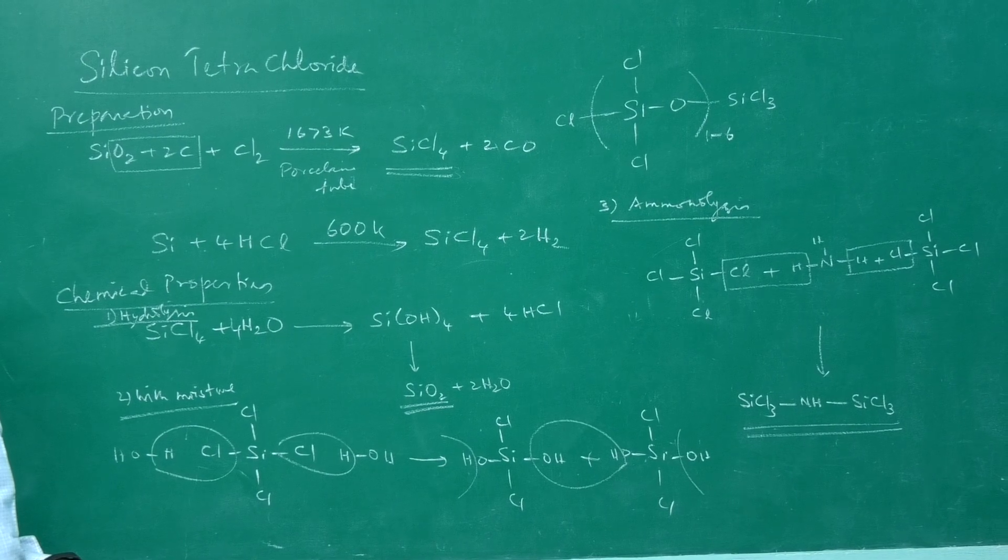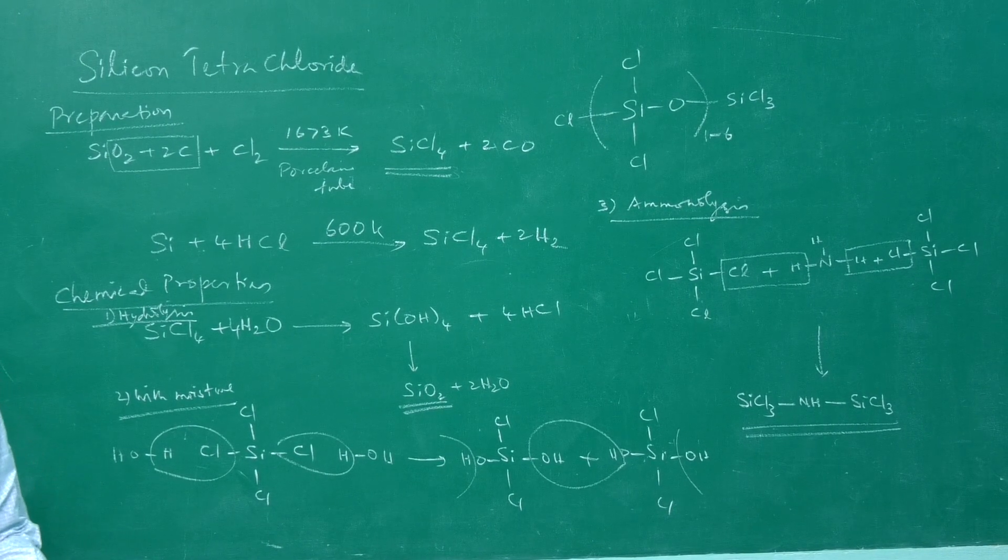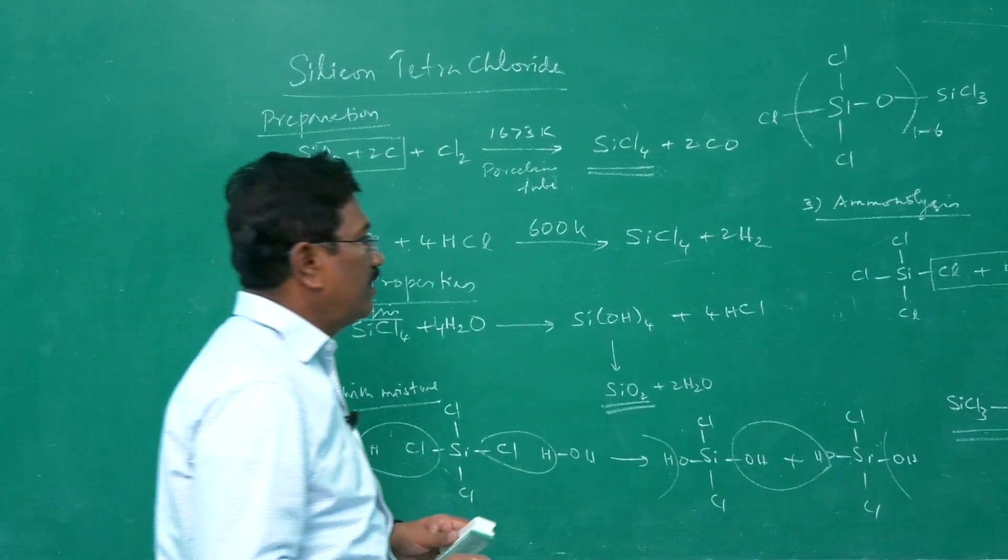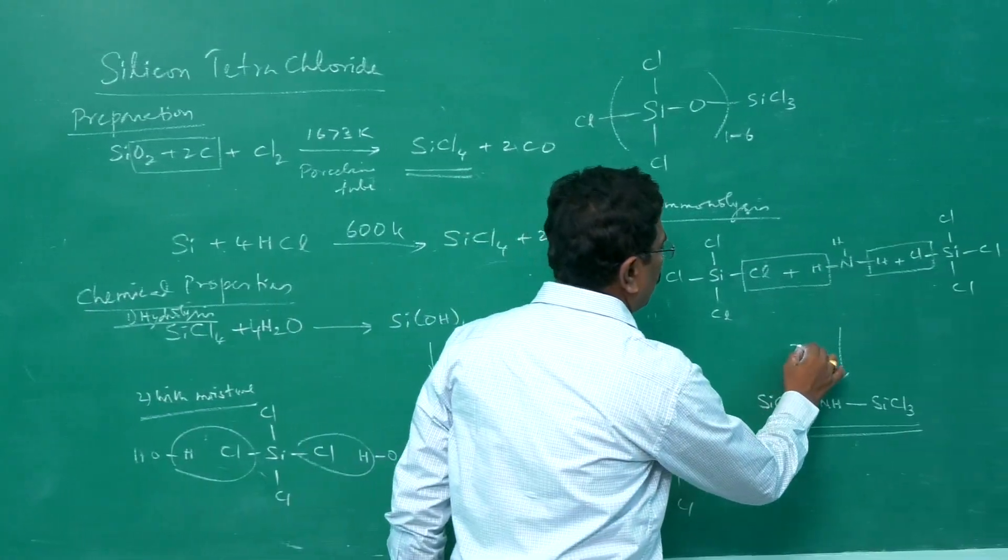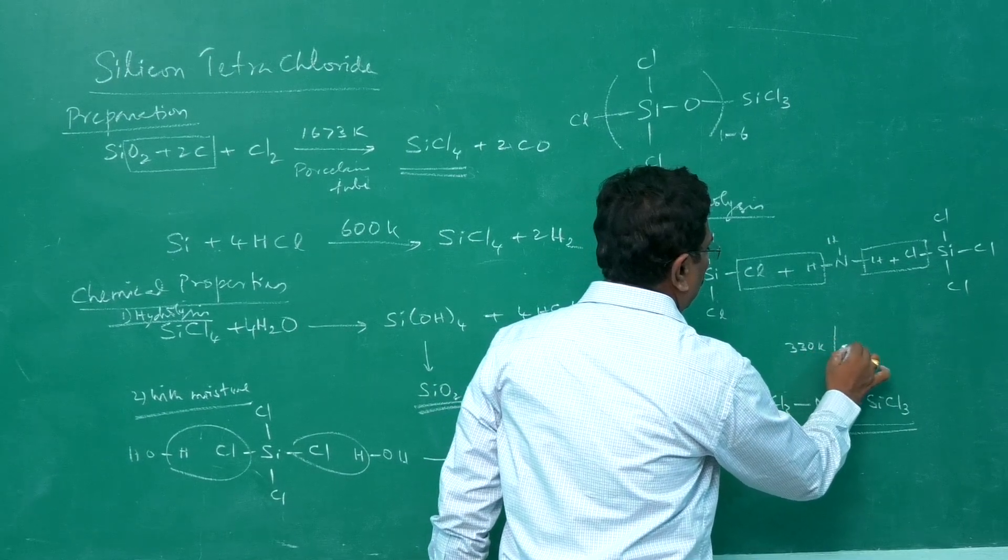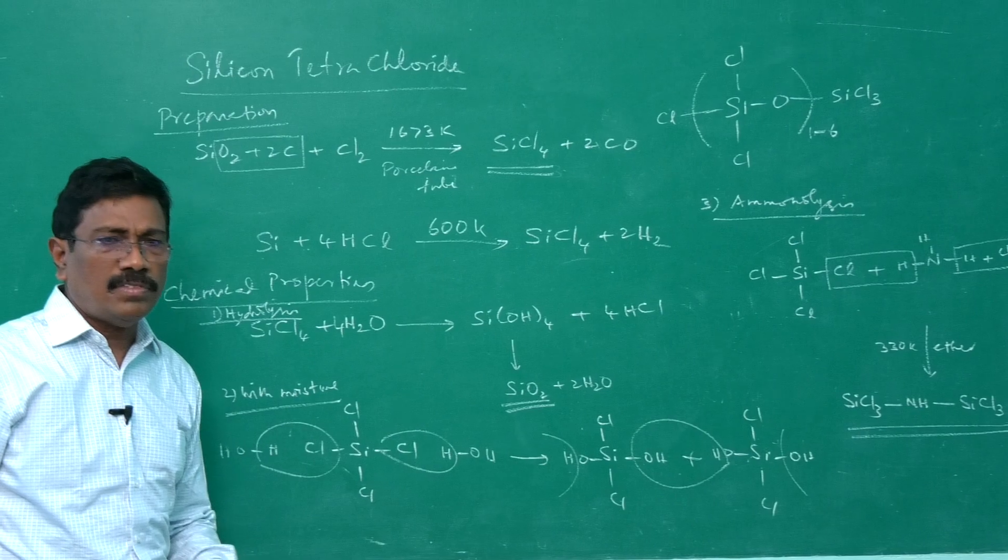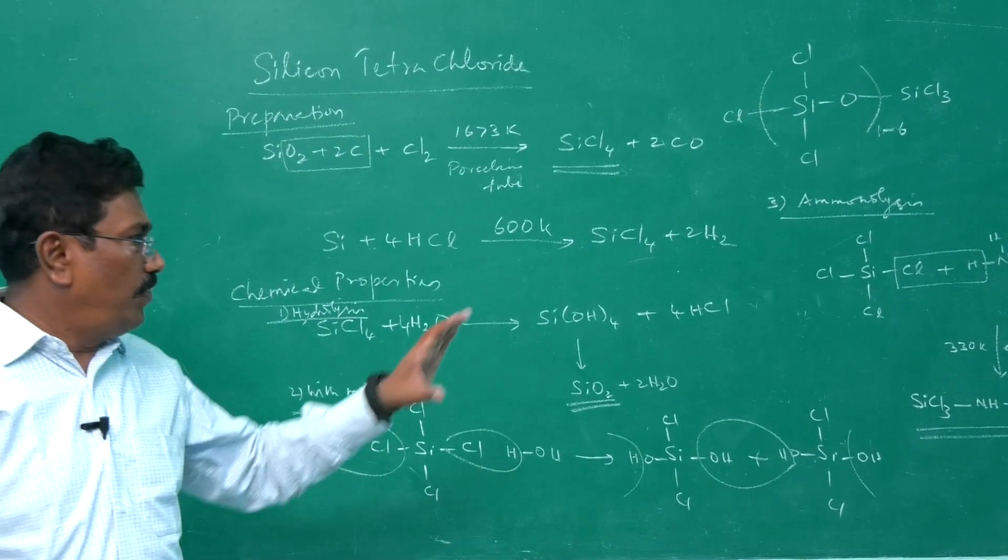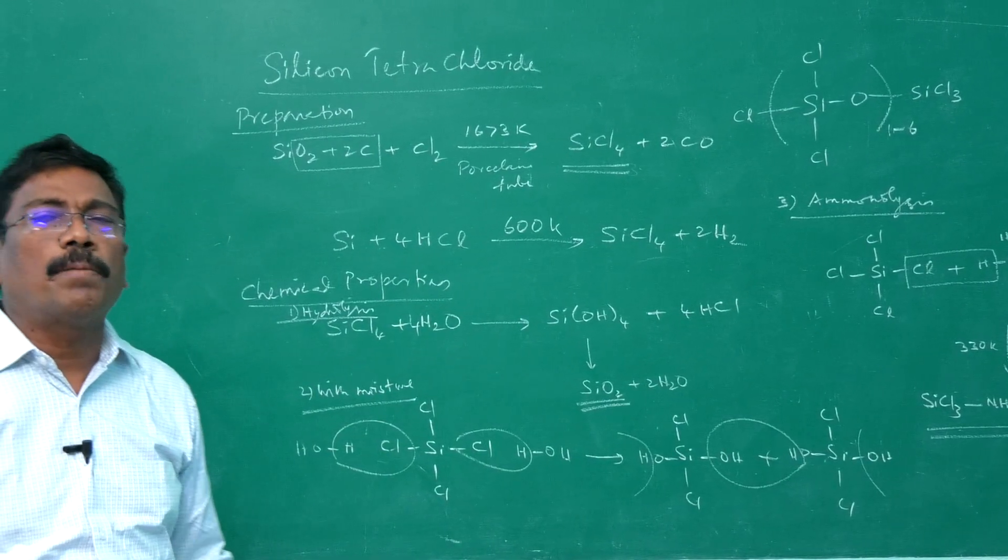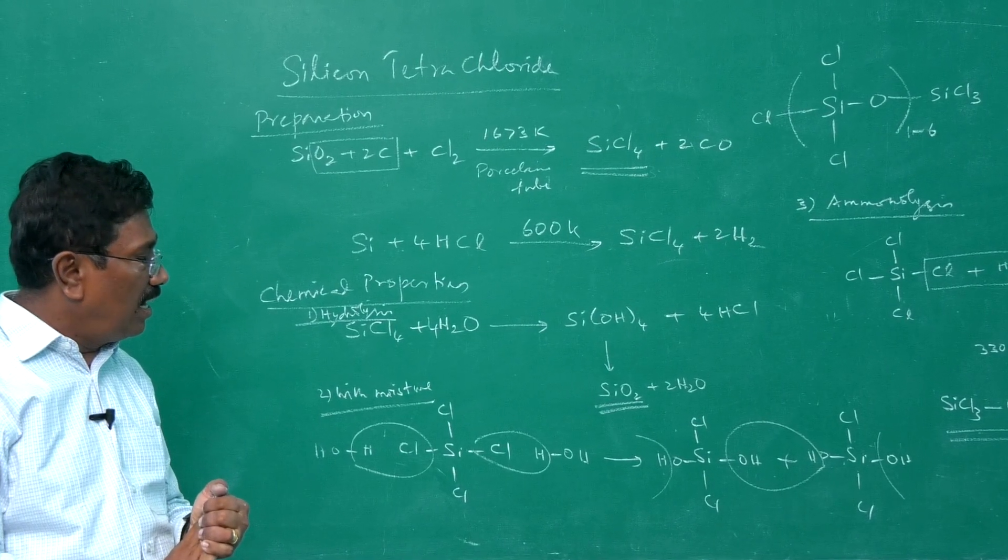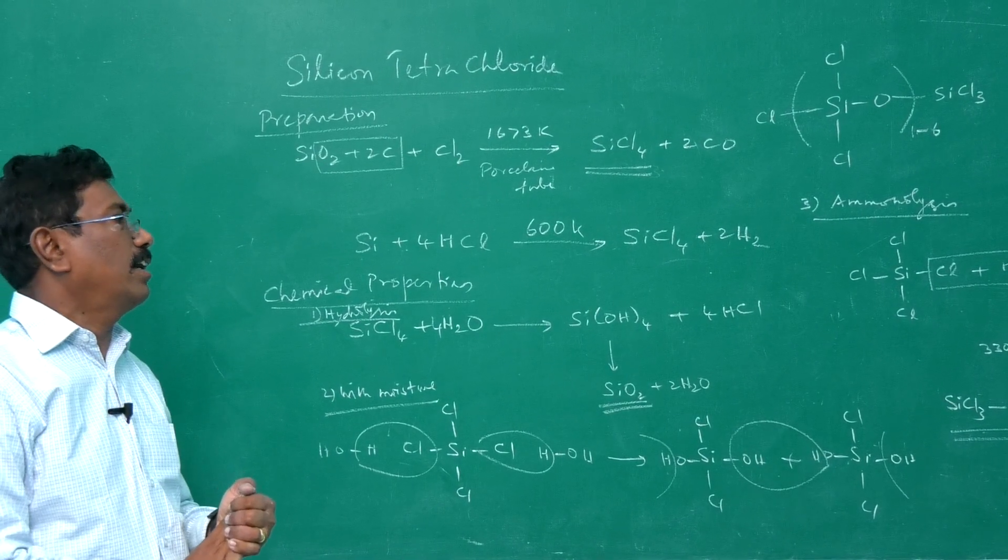Ammonia with silicon tetrachloride—the reaction usually takes place at 330 Kelvin in the presence of ether. With that we complete chemical properties of SiCl4, silicon tetrachloride.